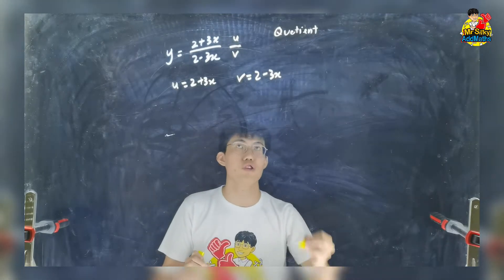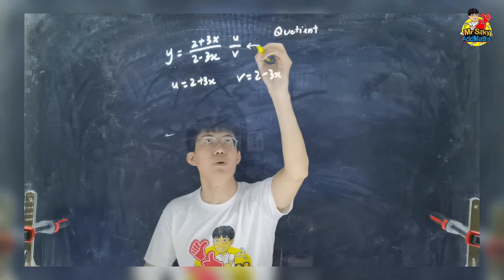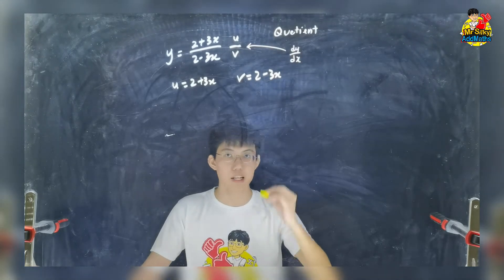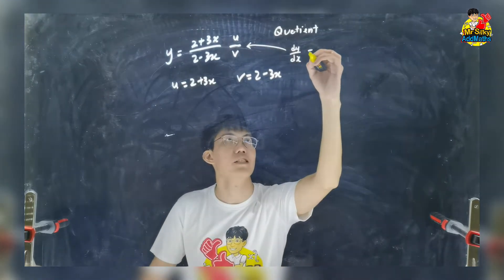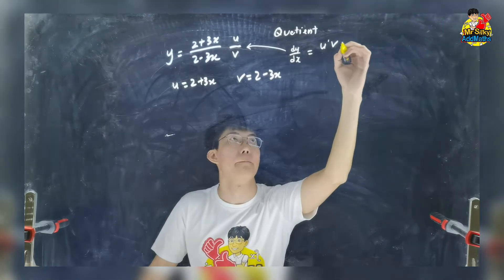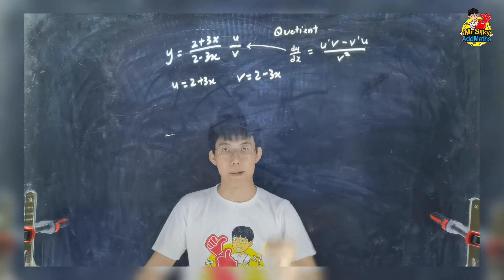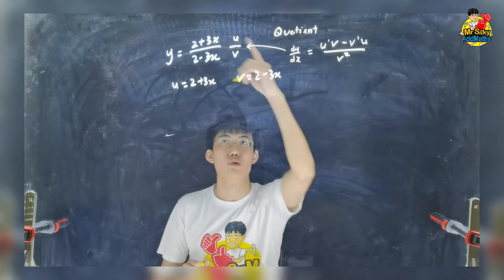How do we differentiate a u over v? We will get something like that. Always memorize the formula. It is not even in your exam anymore. It is u prime v minus v prime u over v square. That's how you do quotient method.